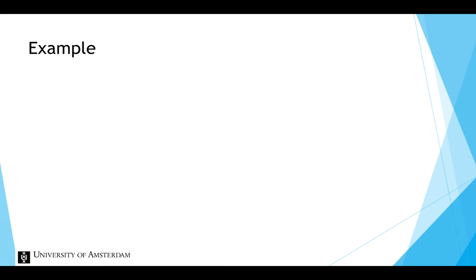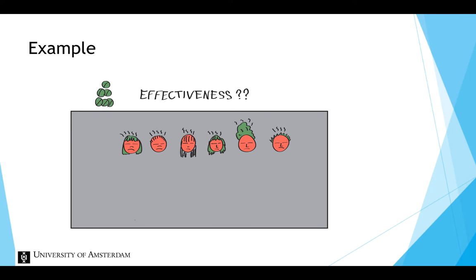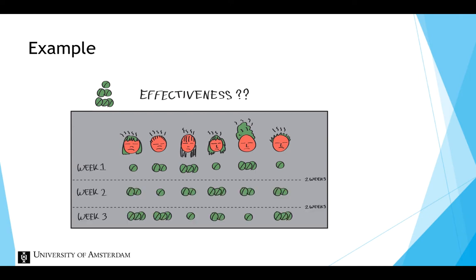Suppose we want to investigate the effectiveness of a new drug in reducing migraine attacks. The participants in our sample are people with migraine. In the most standard approach, we randomly assign the participants to one of three dosages. But in a repeated measures design, we assign participants to all three dosages — low, medium, and high — one after another for three weeks, for example.